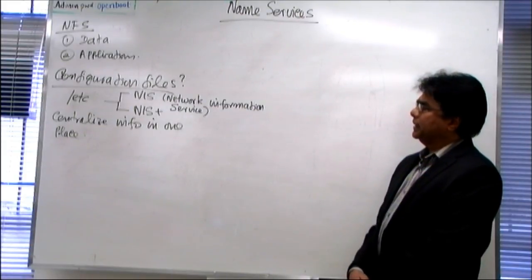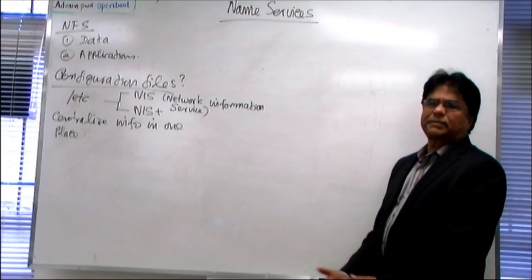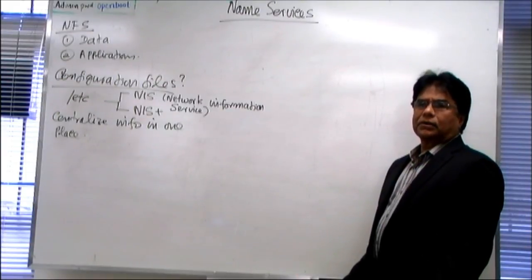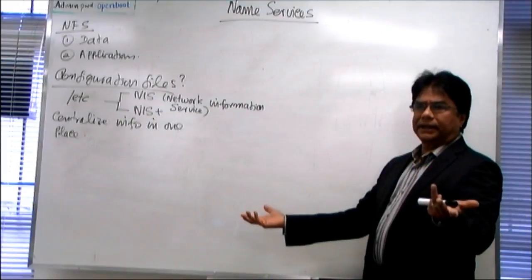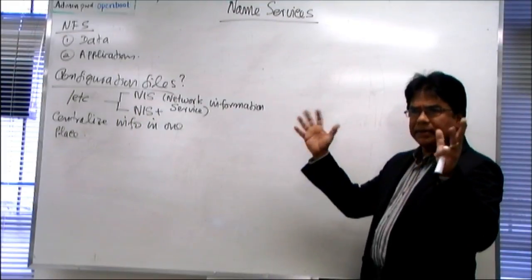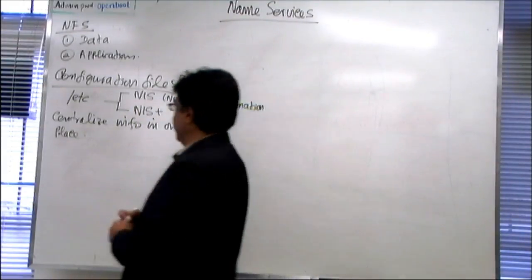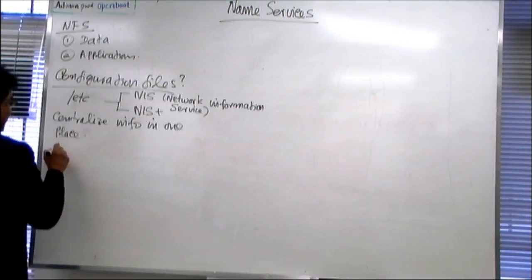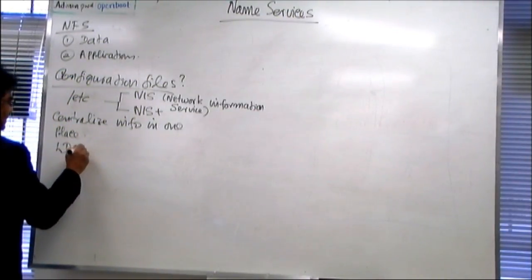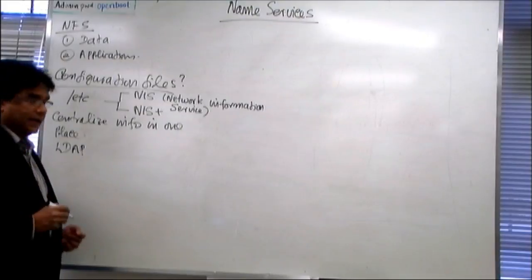Apart from ETC files, some other information like email addresses, company, like location of people in the company, where they're located, those type of information also saved in one place. For that, we can use something like LDAP, Lightweight Directory Access Protocol.